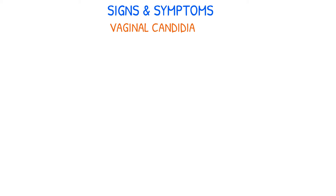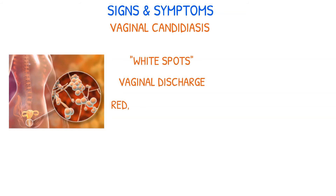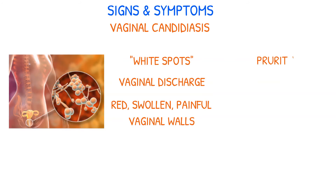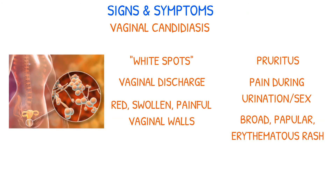Vaginal candidiasis manifests as vaginitis, which is marked by white spots, vaginal discharge, and red, swollen, and painful vaginal walls. Other common symptoms include pruritus, pain during urination and sexual activity, and a broad, papular erythematous rash with tiny lesions.